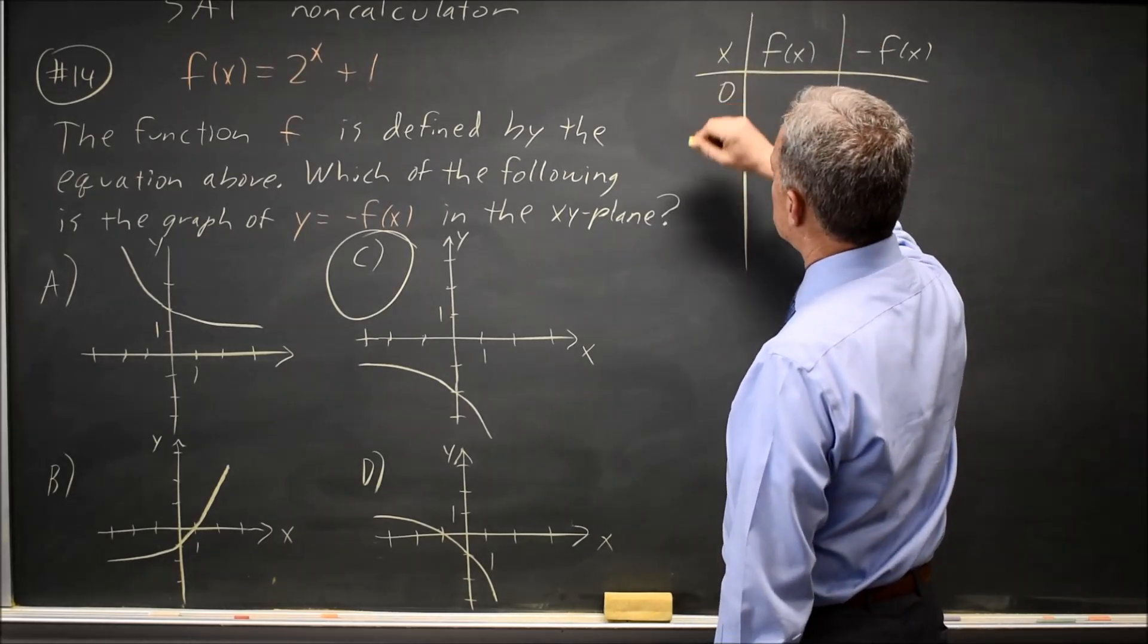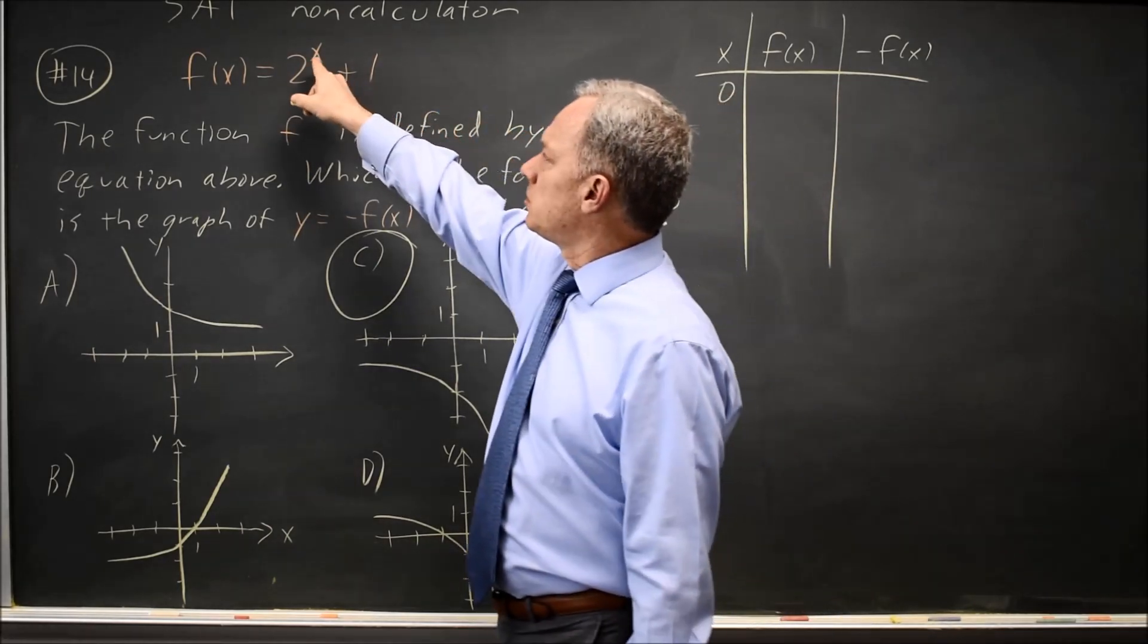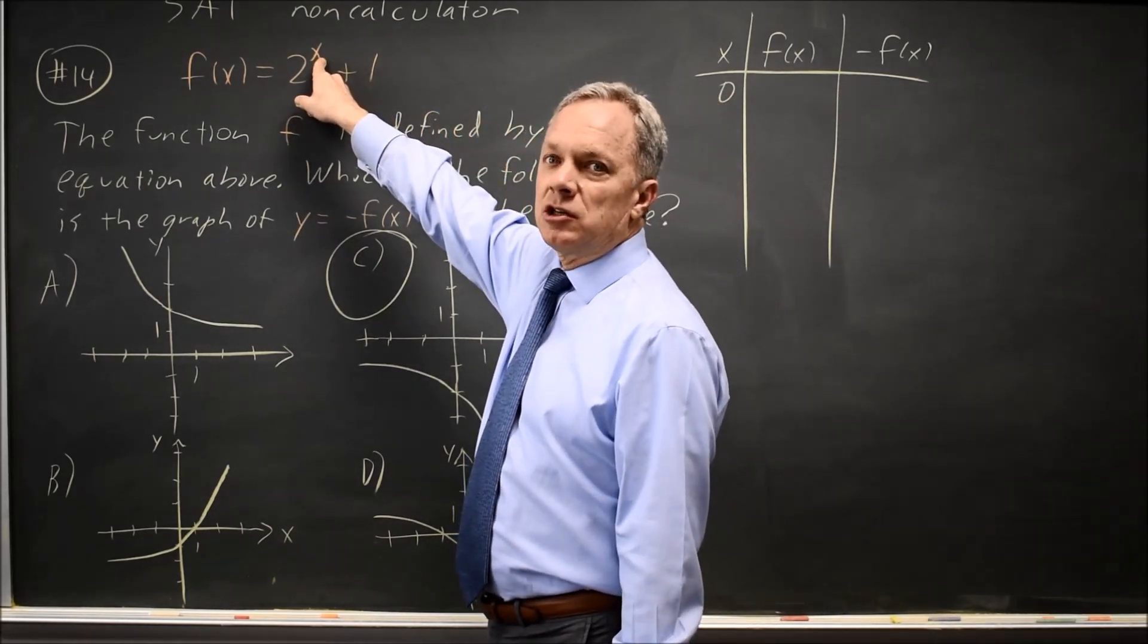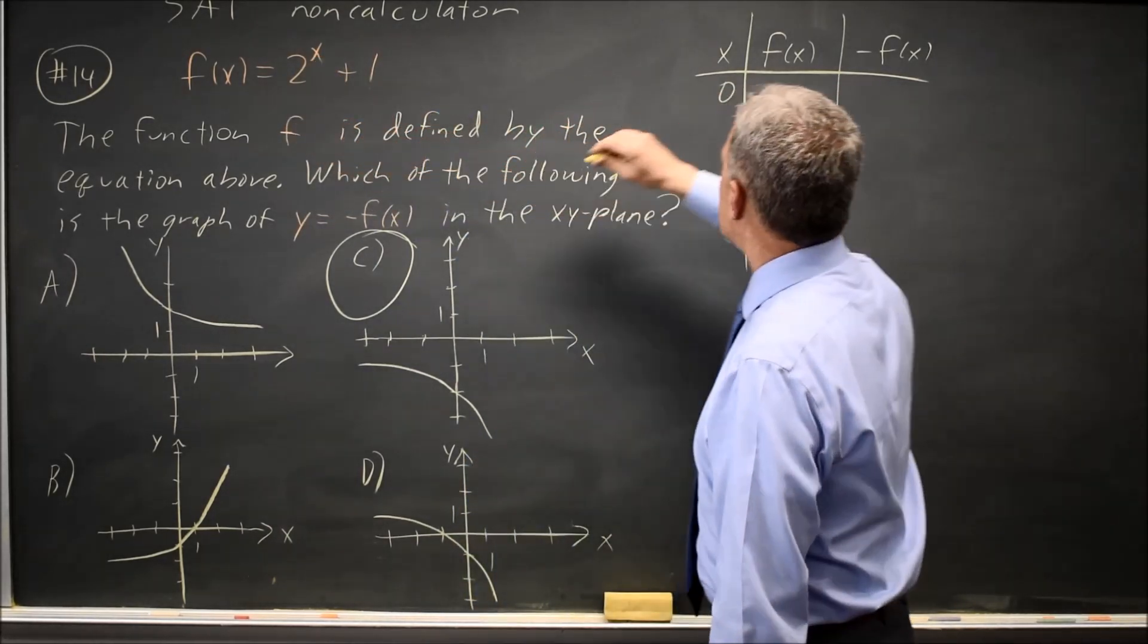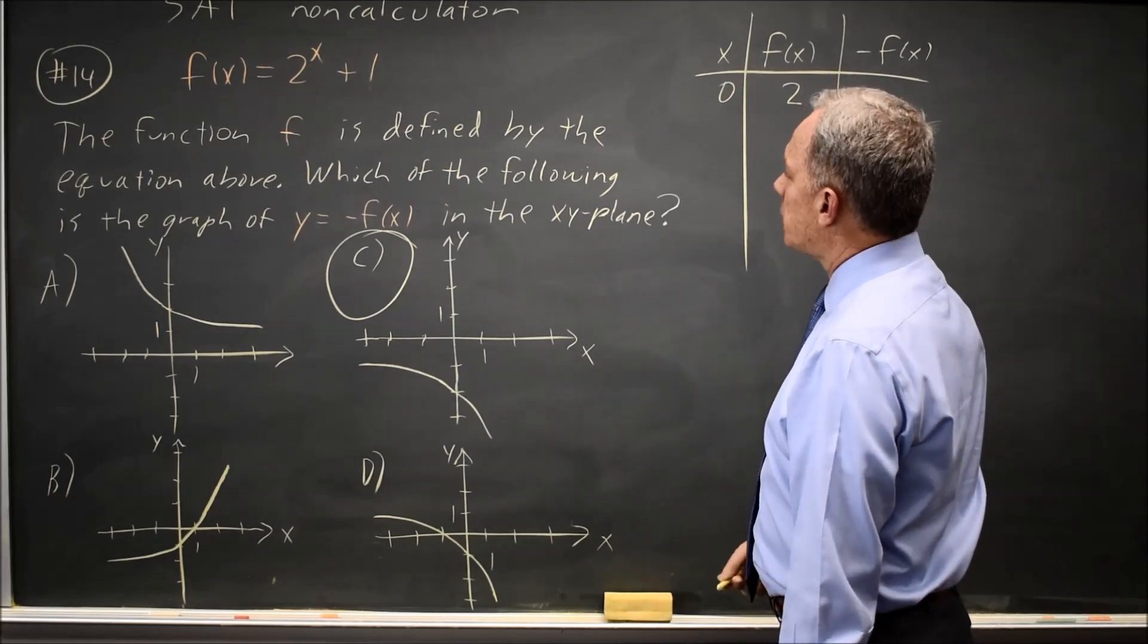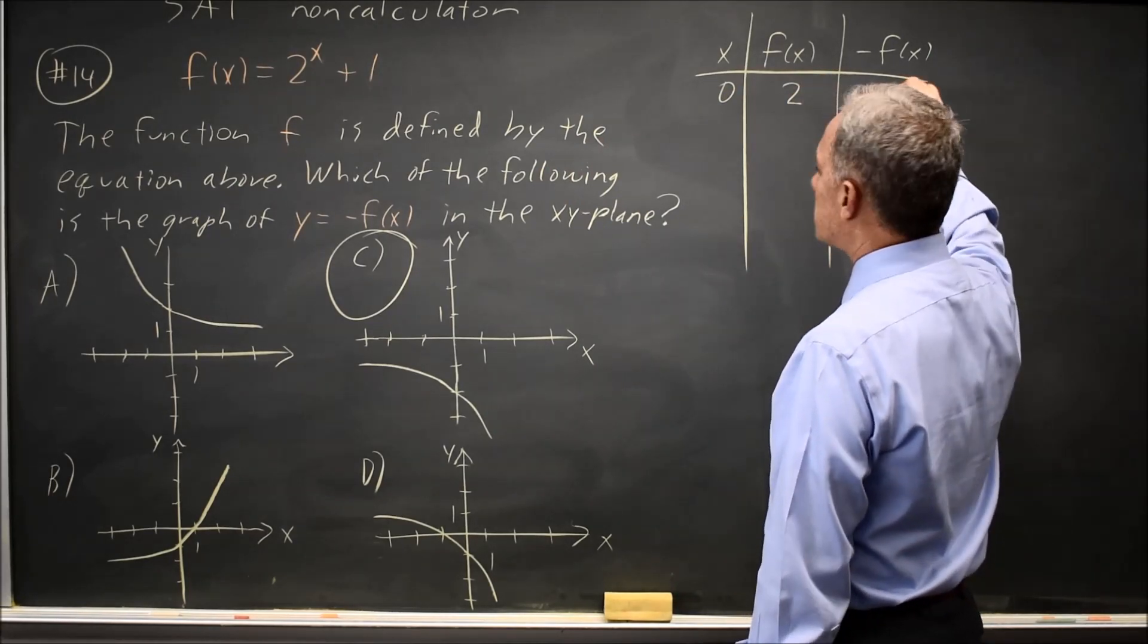So with x equals 0, f of x is 2 to the 0 plus 1. 2 to the 0 is 1, so f of x is 1 plus 1 is 2, and negative f of x would be negative 2.